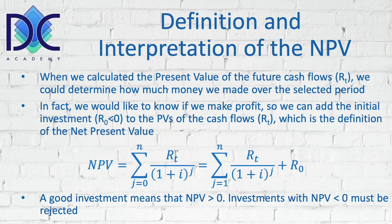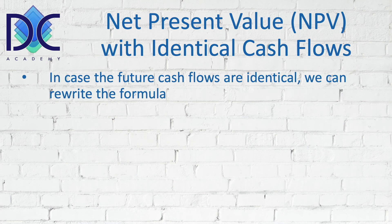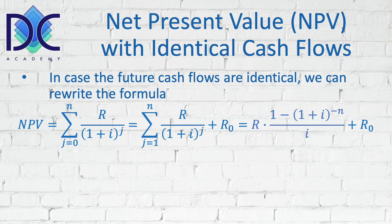When we consider a simple case with identical cash flows, we can rewrite the formula. The sum of the discounted cash flows becomes R divided by (1 + i) to the power j, where R is now a constant. We can write this as R multiplied by [1 − (1 + i)^(−n)] divided by the interest rate. Of course, we then subtract the initial investment — or add R0, since R0 is a negative value.